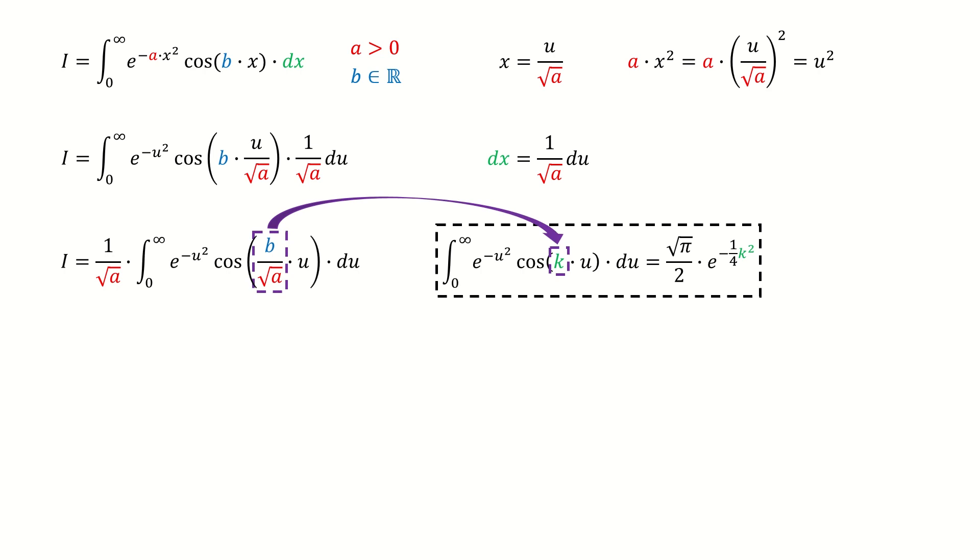So if we compare the coefficient with our previous result, we can see we only need to set k equals to b over square root a, then we are done.